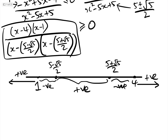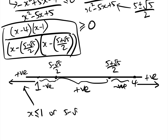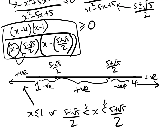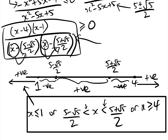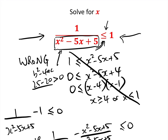The remaining regions are negative. So the solution to our inequality is: x ≤ 1, or (5 − √5)/2 < x < (5 + √5)/2 — note these are strict inequalities because x cannot equal (5 − √5)/2 or (5 + √5)/2, as that would make the expression undefined — or x ≥ 4.